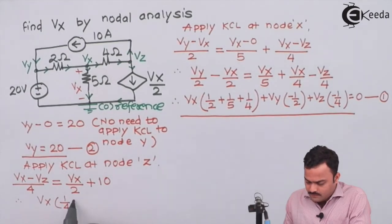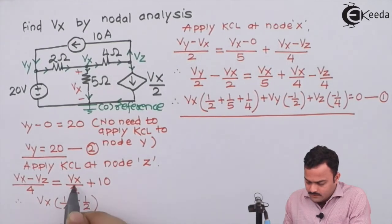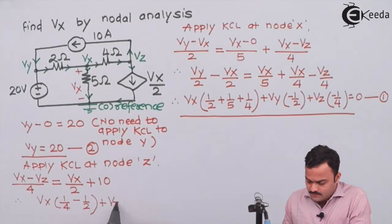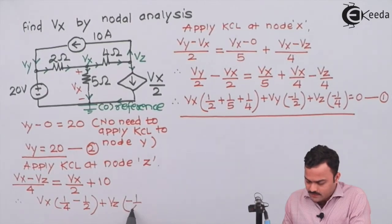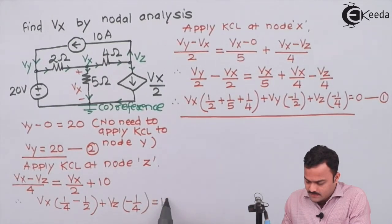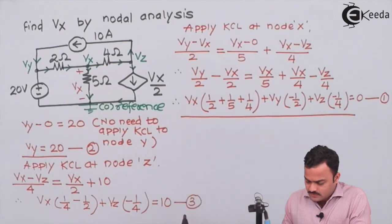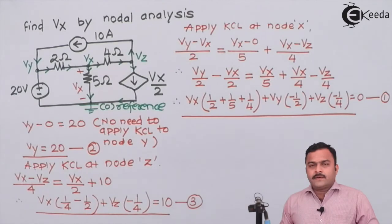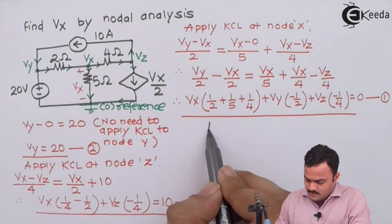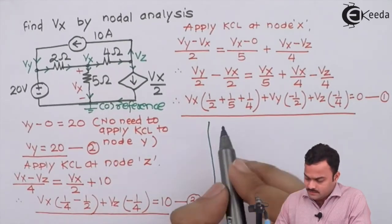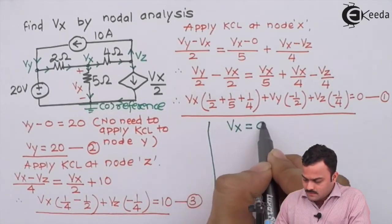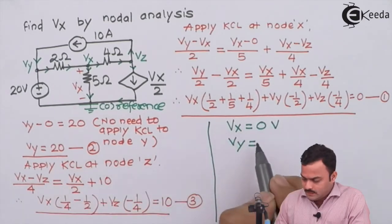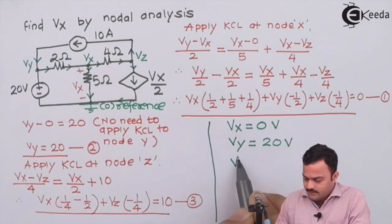So after simplifying, what we will get over here is Vx: 1/4 minus 1/2 we will get this Vx on this side, plus Vz as minus 1/4, and the constant 10 will remain there as it is to form equation number 3. Three equations, three unknowns.